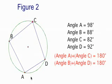But those opposite angles, A and C, B and D, they still add up to 180, no matter what. 98 plus 82, 180. 88 plus 92, 180.